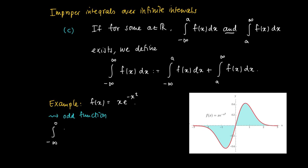In the former example, we've seen that the integral from minus infinity to 0 of f(x) dx equals minus one half. But due to the symmetry from the oddness of the function, we get that the integral from 0 to infinity of f(x) dx equals one half.